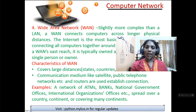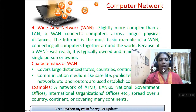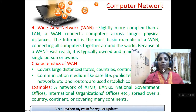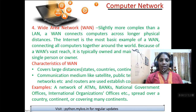MAN connects computers across longer physical distances. The internet is the most basic example — connecting all computers together around the world. So when you have the interconnection of LANs and MANs, that becomes a WAN.